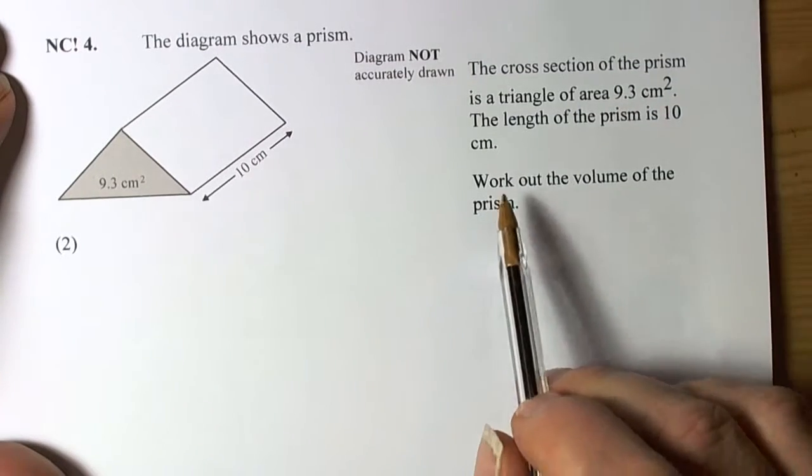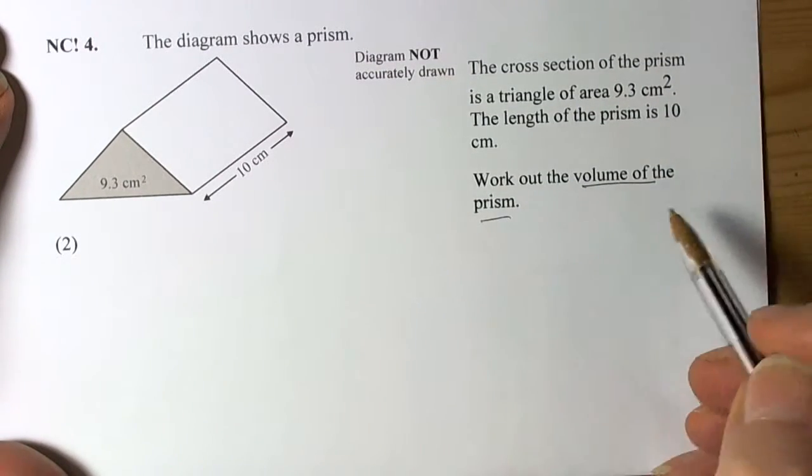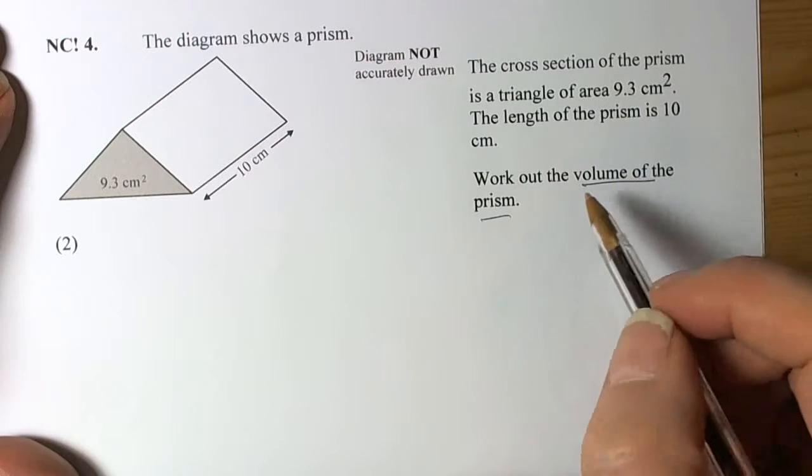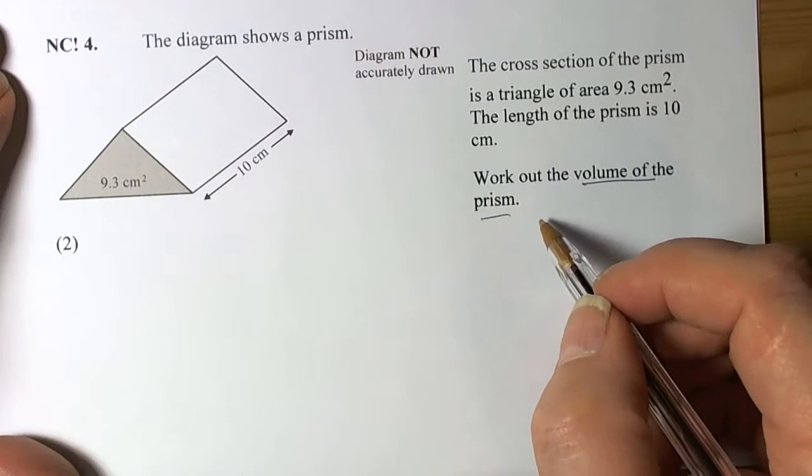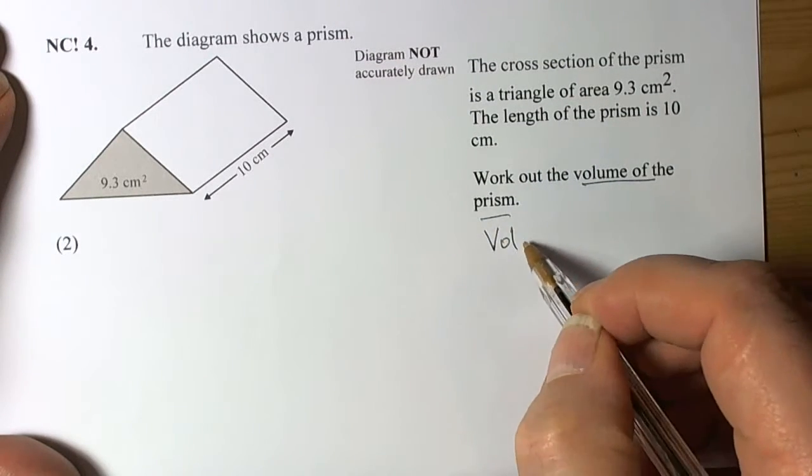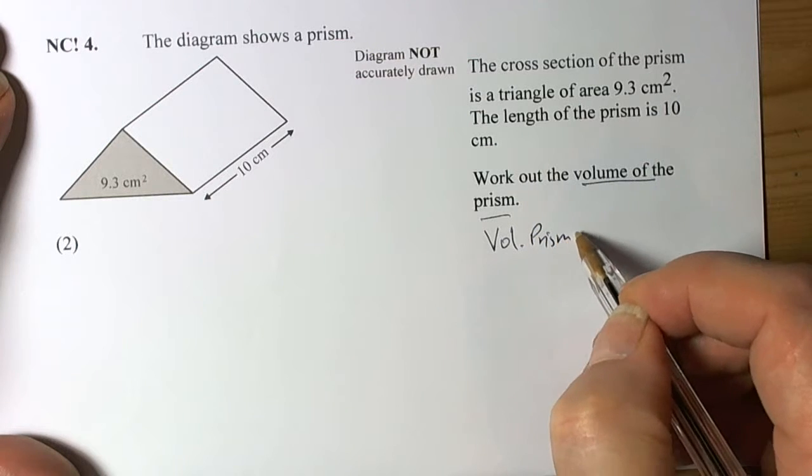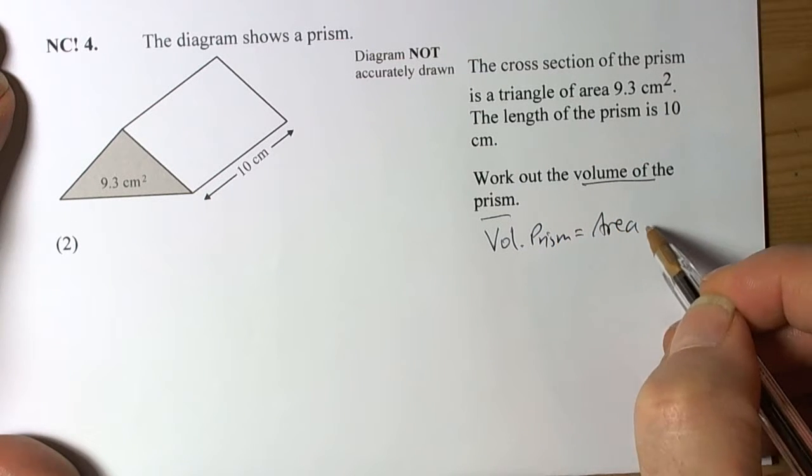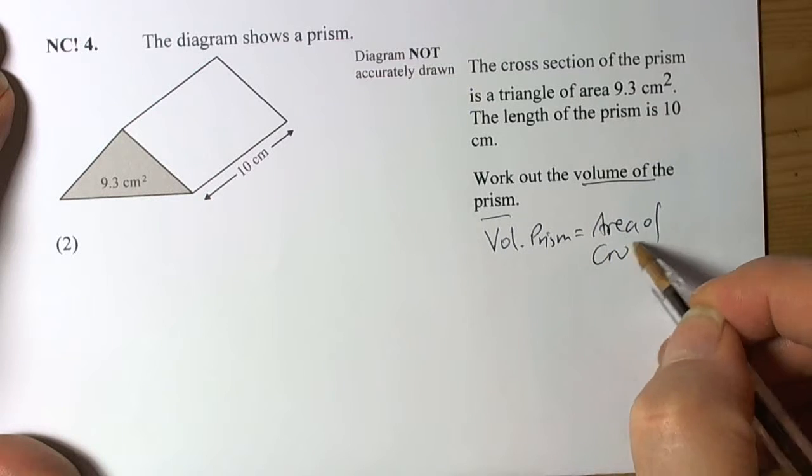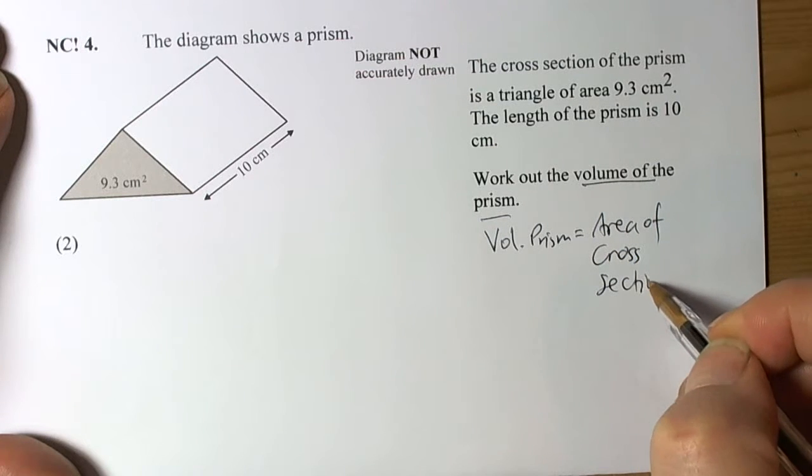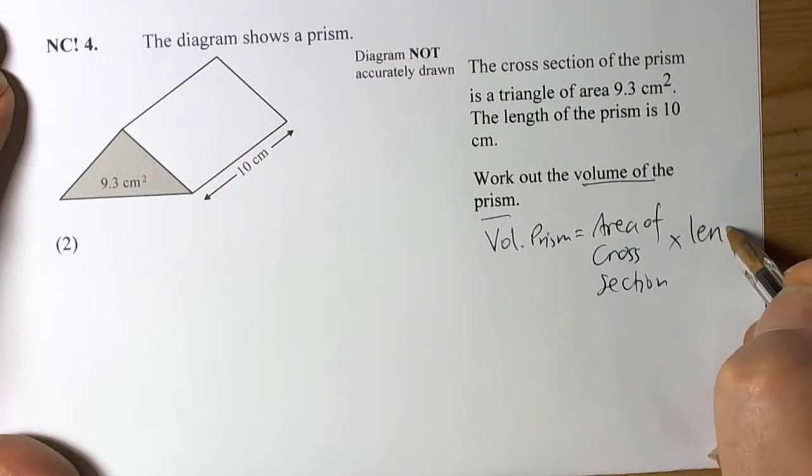Okay, so here we've got a question involving the volume of a prism. Like always, it's a formula so we should be writing it down. The volume of a prism is equal to the area of cross section times the length of the prism.